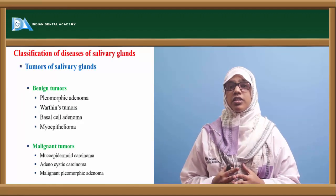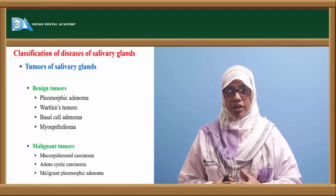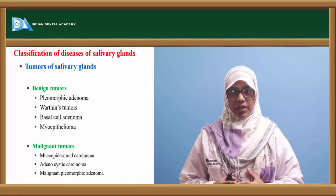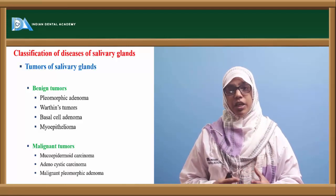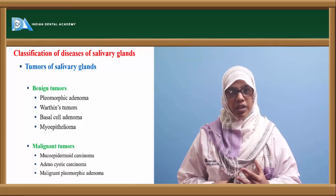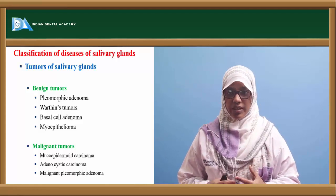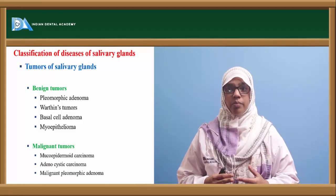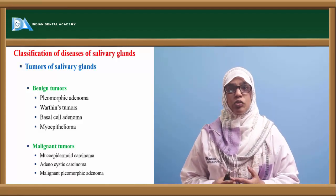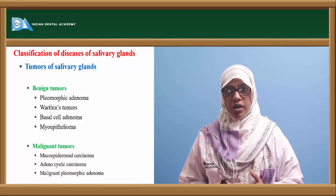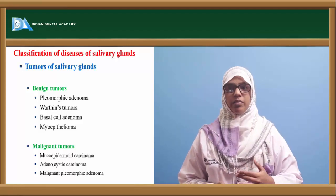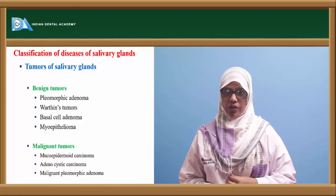In the classification of tumors: benign tumors include pleomorphic adenoma, Warthin's tumor, basal cell adenoma, and myoepithelioma. Malignant tumors include mucoepidermoid carcinoma, adenoid cystic carcinoma, and malignant pleomorphic adenoma.